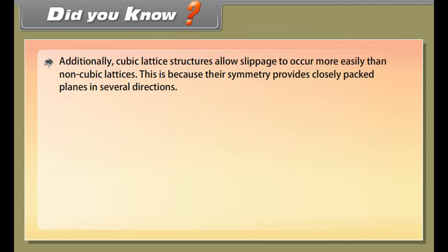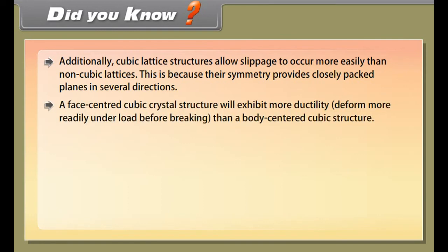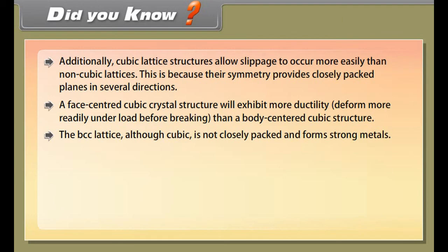A regular three-dimensional arrangement of points in space is called a crystal lattice. Unit cell is the smallest portion of a crystal lattice which, when repeated in different directions, generates the entire lattice.